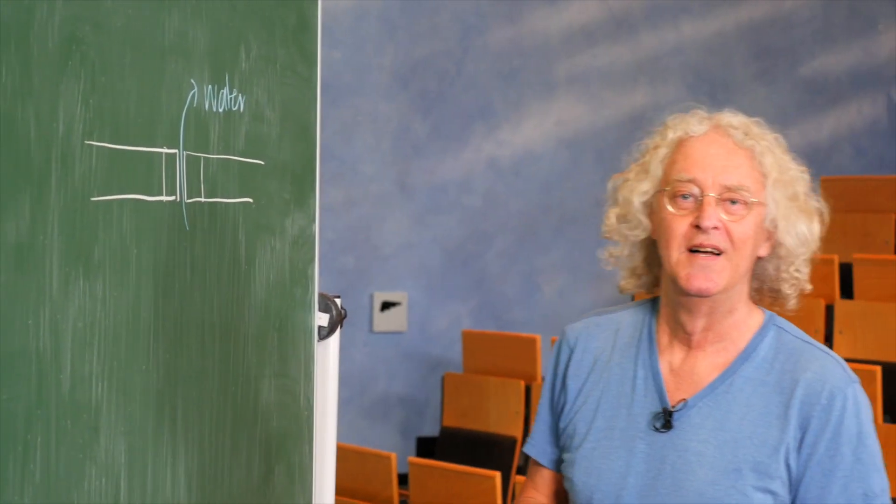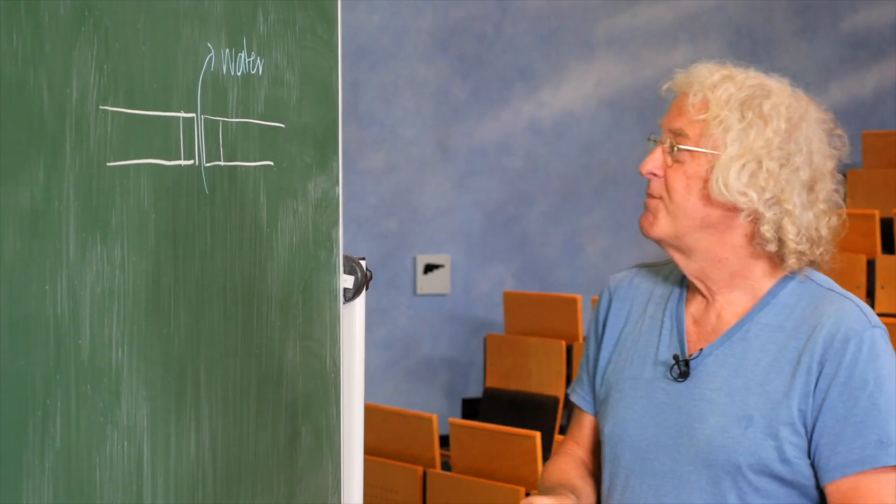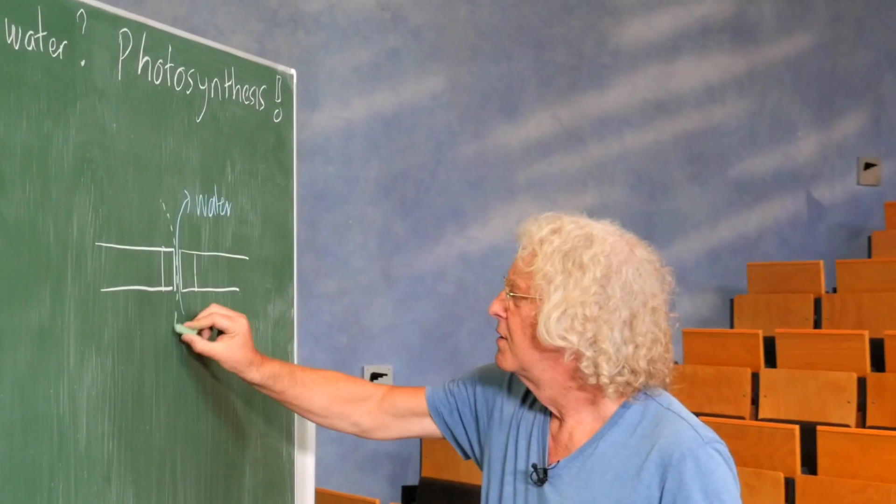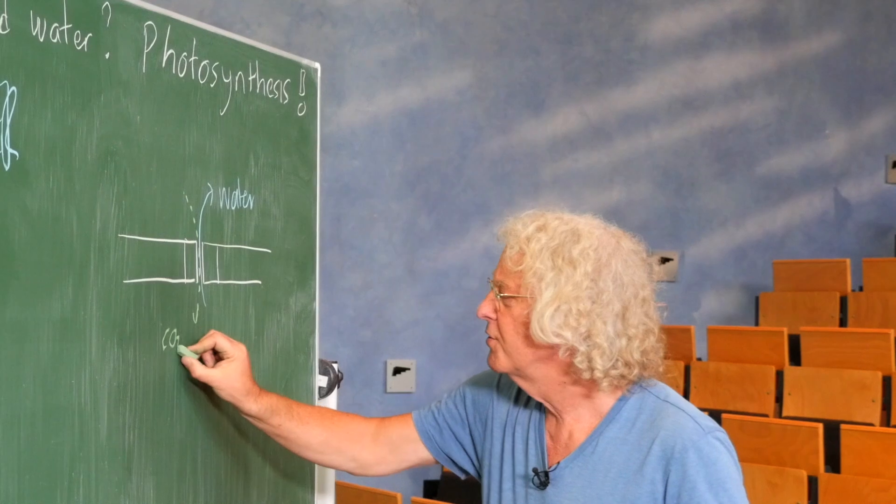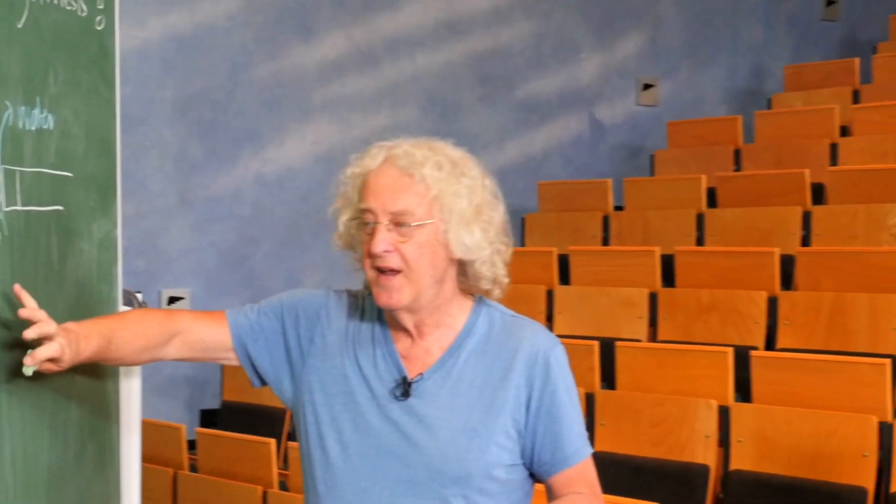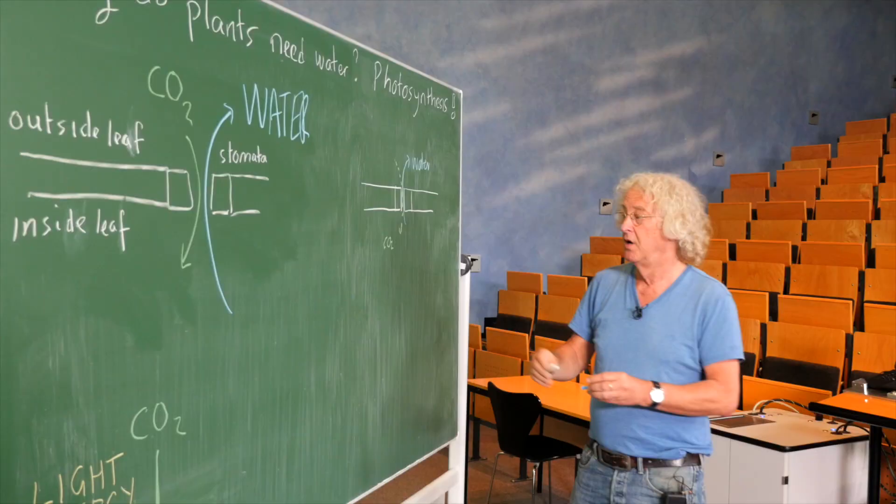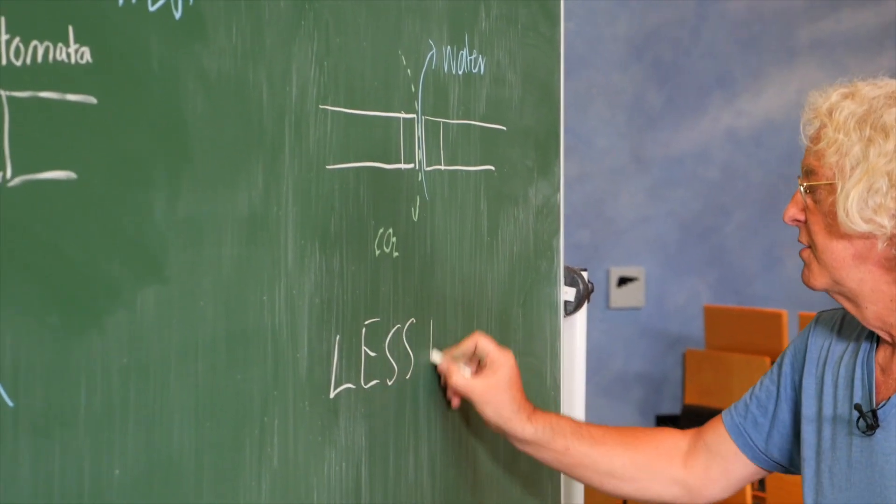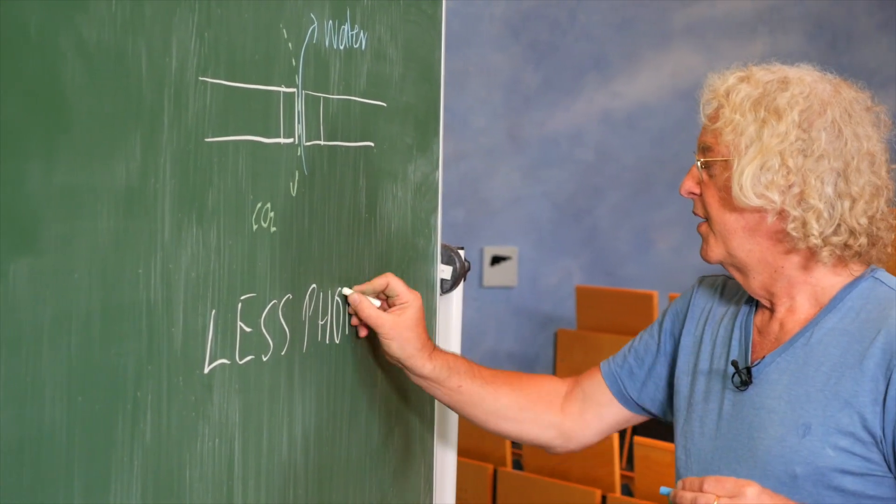Okay, fine. But of course, if the hole is smaller, it also means that less carbon dioxide gets into the leaf, so the concentration in the leaf falls. And that means less photosynthesis.